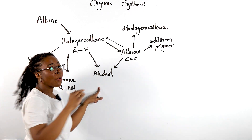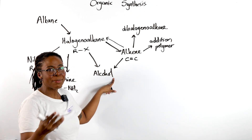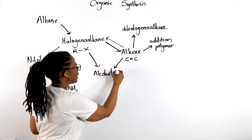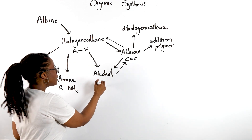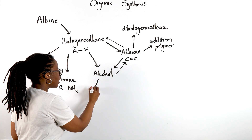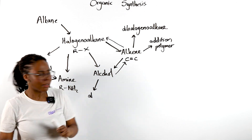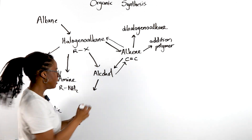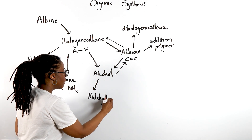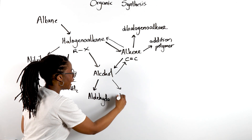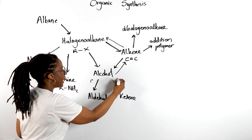Let's come back to our alcohol. Alcohols — we know that our typical reactions are either an elimination or dehydration reaction to turn it into an alkene, or we can oxidize our alcohol. Depending on which type of alcohol we're starting with, we can oxidize that to an aldehyde or to a ketone — depending on whether we're dealing with a primary or a secondary alcohol.